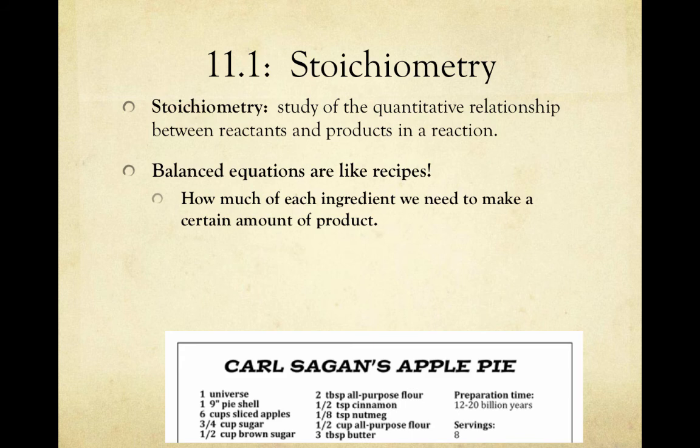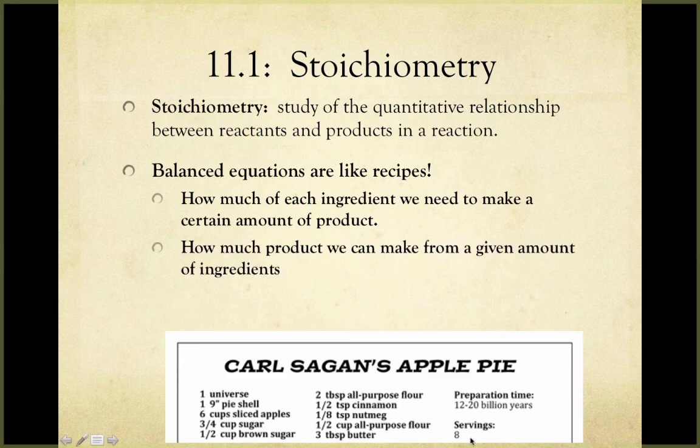First, it tells us how much of each ingredient we need to make a certain amount of product. So, as you can see here, if we want to make eight servings of apple pie, we're going to need one nine-inch pie shell, two tablespoons all-purpose flour, and so on and so forth.